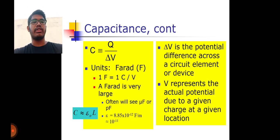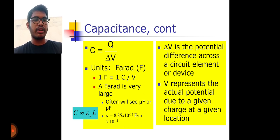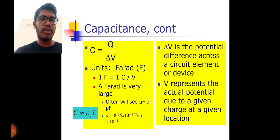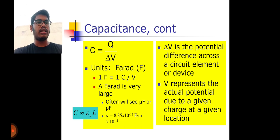Capacitance is given by C equals Q divided by delta V, where the units are Farads. One Farad equals one Coulomb per Volt. A Farad is a very large unit, so often we use microfarads or picofarads. The permittivity value is 8.85 times 10 to the minus 12. Delta V is the potential difference across the device, representing the actual potential due to the given charge at a given location.